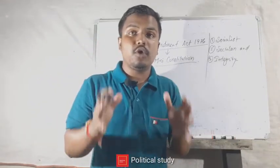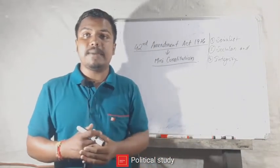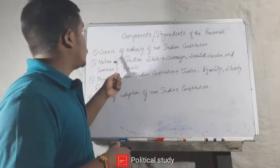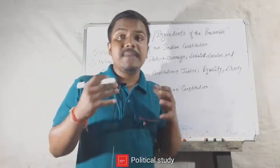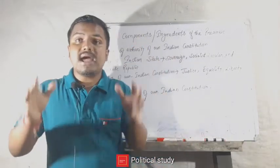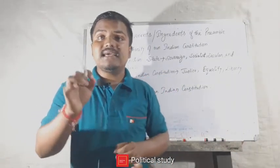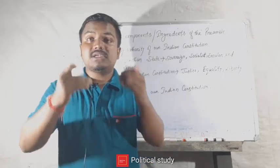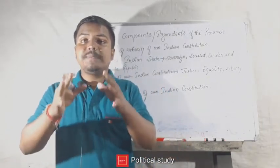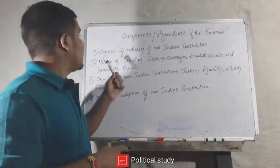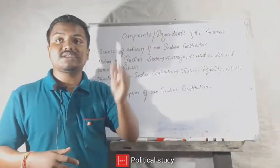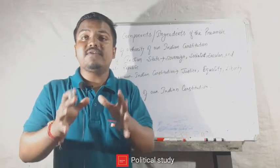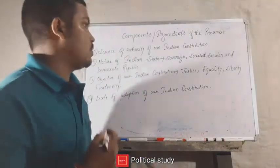Now let's move to our main topic: what are the components or ingredients of the preamble? Our first point is the source of authority of our Indian constitution — from where the constitution of India derives its authority. In the first line of the preamble, it is clearly mentioned: 'We the people of India.' This indicates that the source of authority of our Indian constitution lies with the people of India.